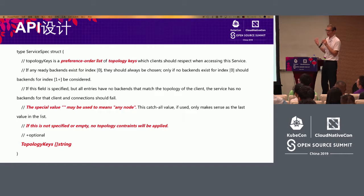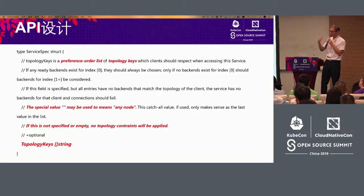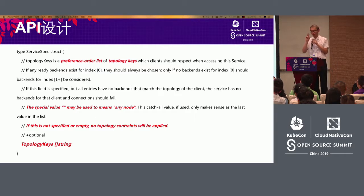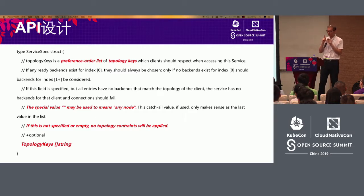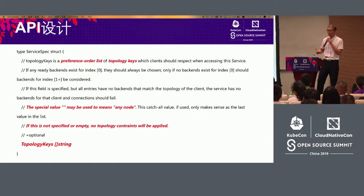The API is quite simple — adding only one field: a string array called topology keys. For the topology keys, the smaller the index, the higher the preference. It means they have a preferred priority. For example, if there are two elements in the array — one is hostname and another is zone — it means first try to match the local host. If it doesn't match, then it goes to the local zone. This is a soft priority ordering.